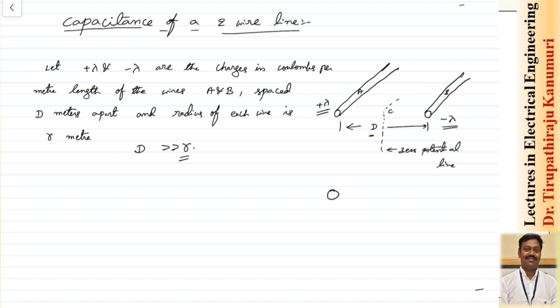The two conductors are separated by distance d — one carrying the negative charge and the other carrying the positive charge. So the potential of the second conductor will be negative and the potential of conductor A will be positive, meaning the zero potential line will be somewhere in between these two conductors.